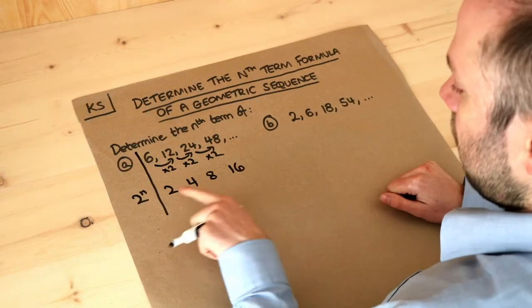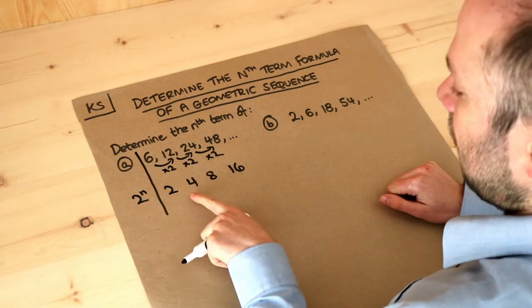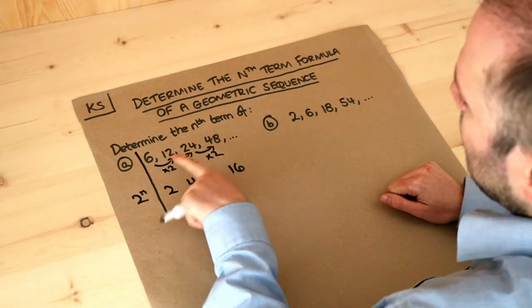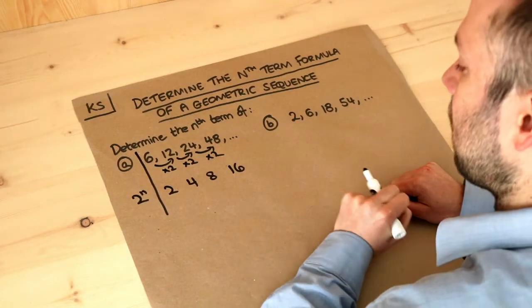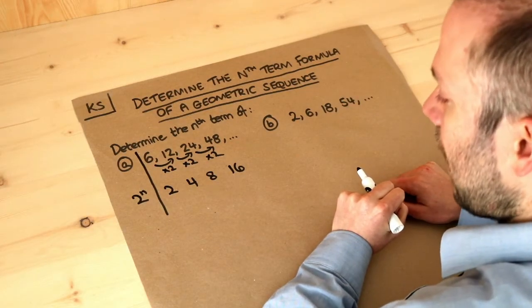At the moment, 2 to the n would give us a sequence of 2, 4, 8, 16. That's not right, is it? We want to get 6, 12, 24, 48 as our sequence, but there's an easy fix.